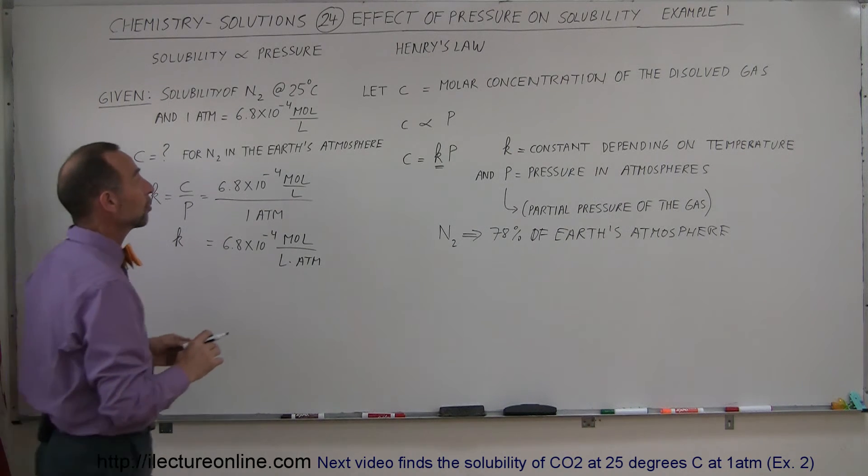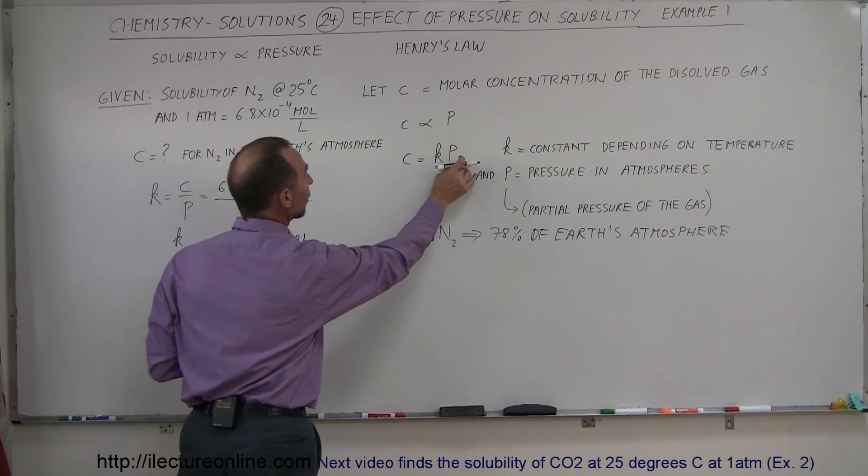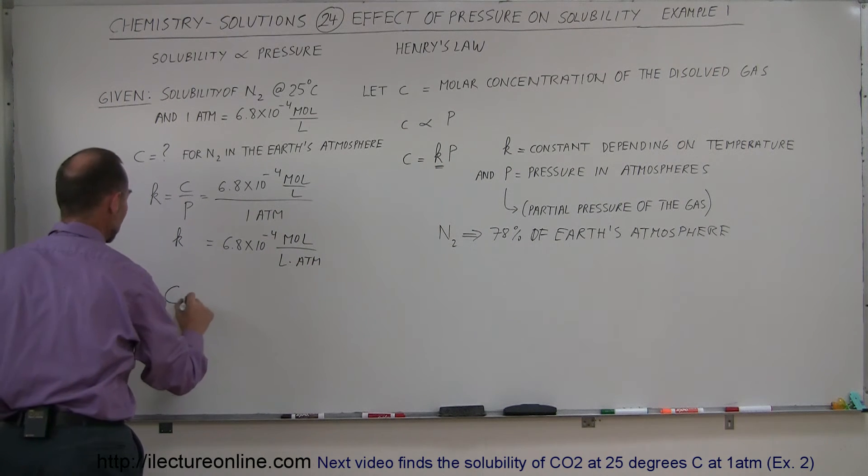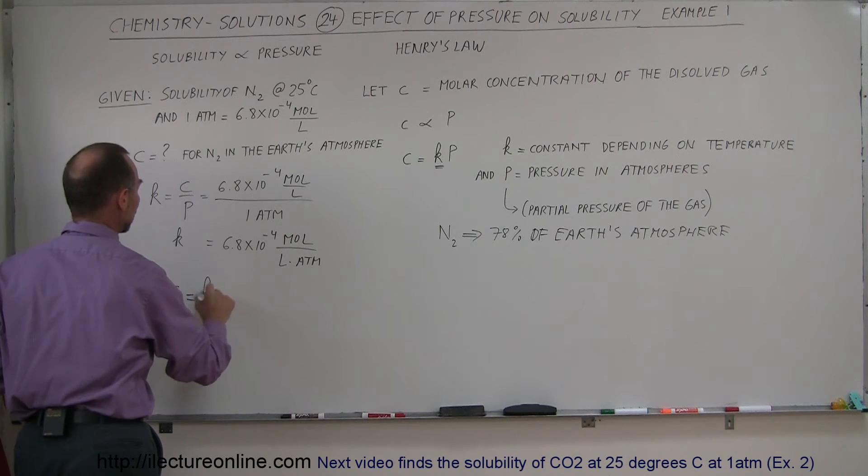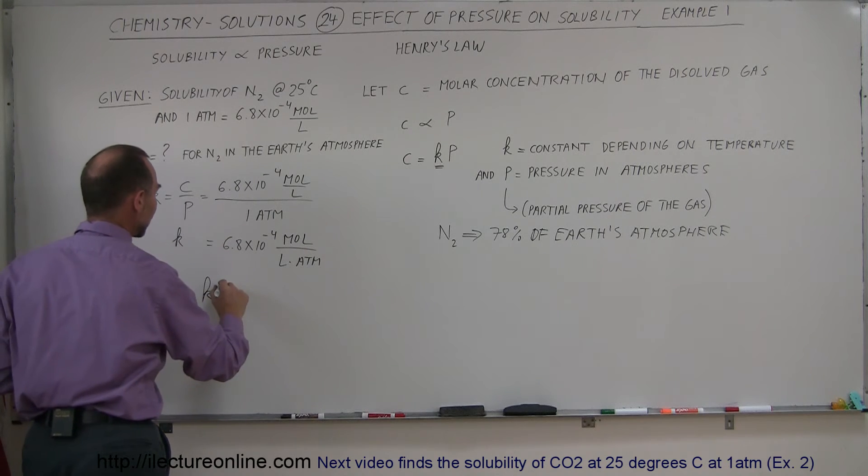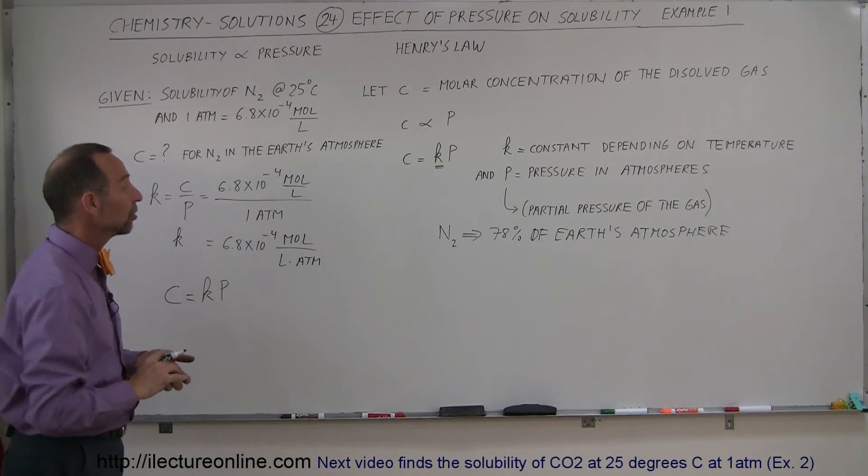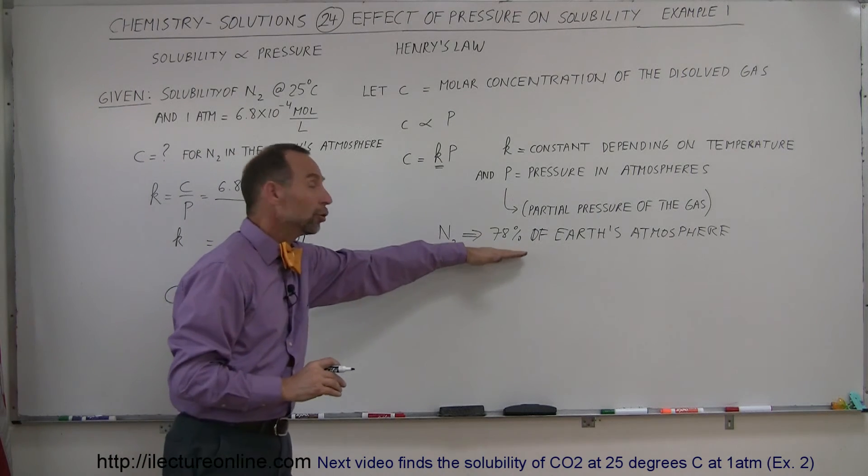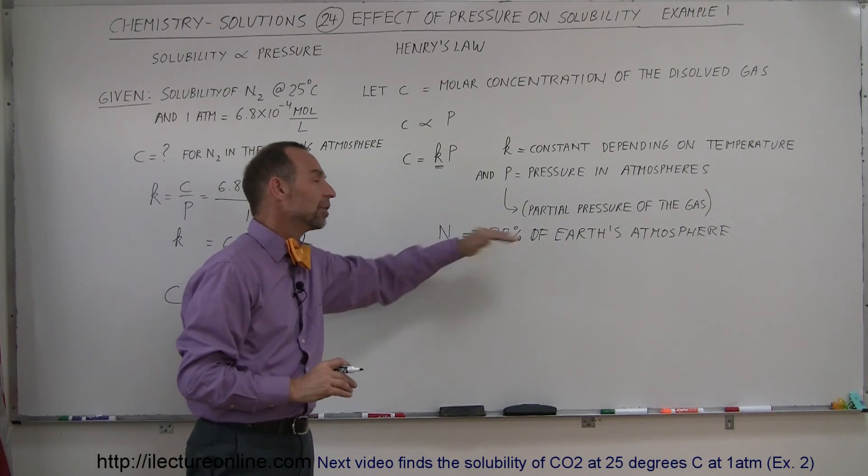So now what we're going to do is we're going to try to find C under a different pressure. So now we say C is equal to K, which we just defined right here, times the pressure that is existent of the condition that we want. In this case, we want to know the partial pressure of nitrogen gas in the atmosphere.